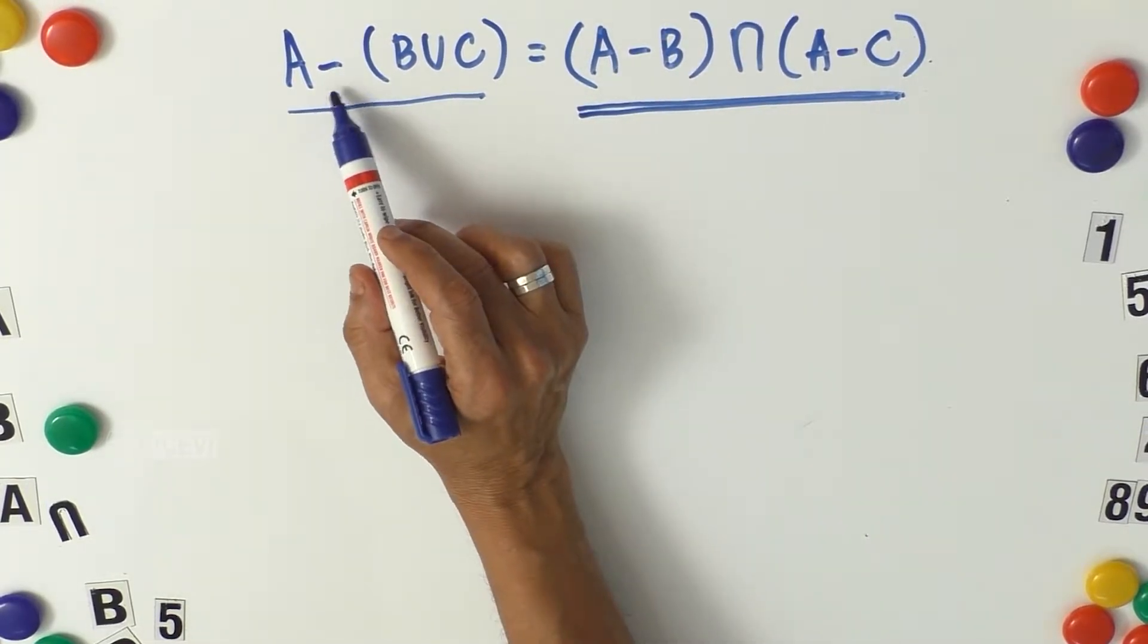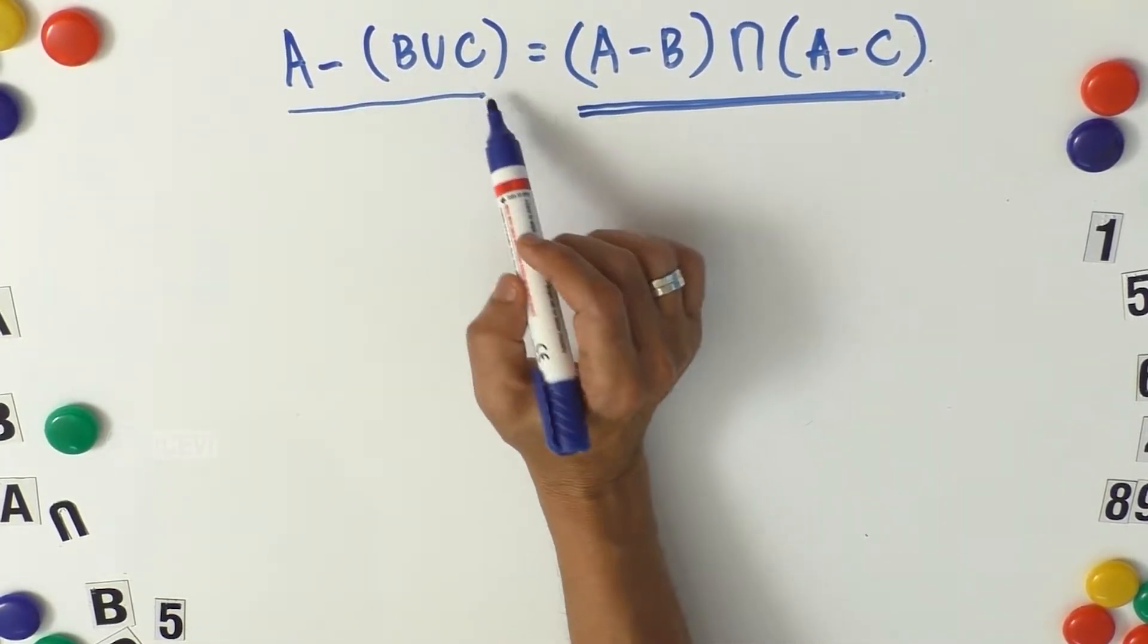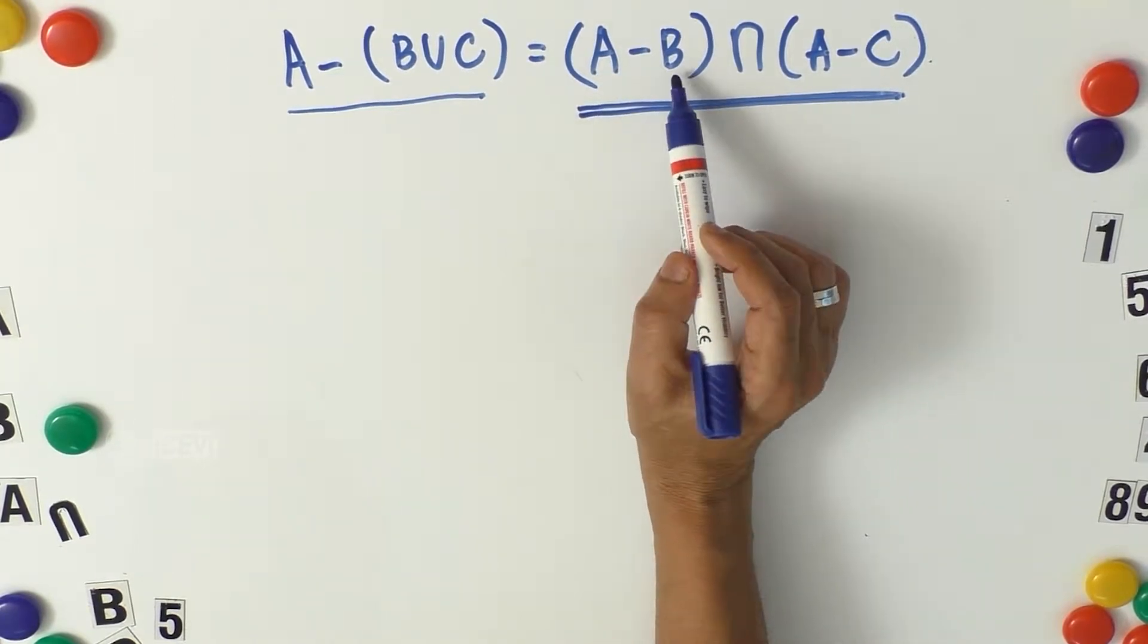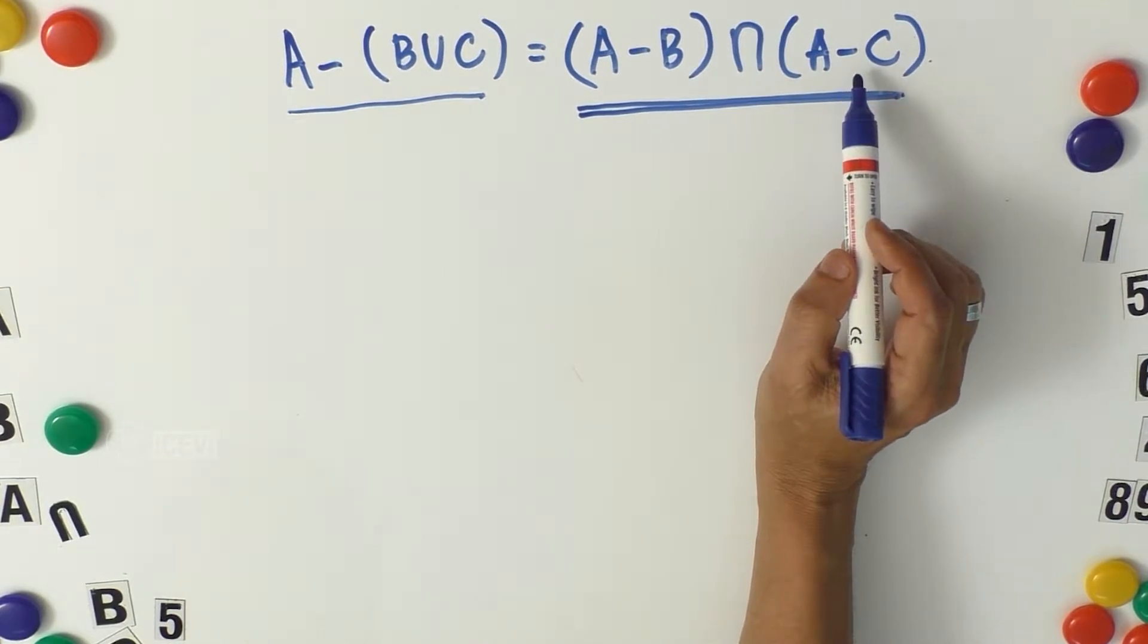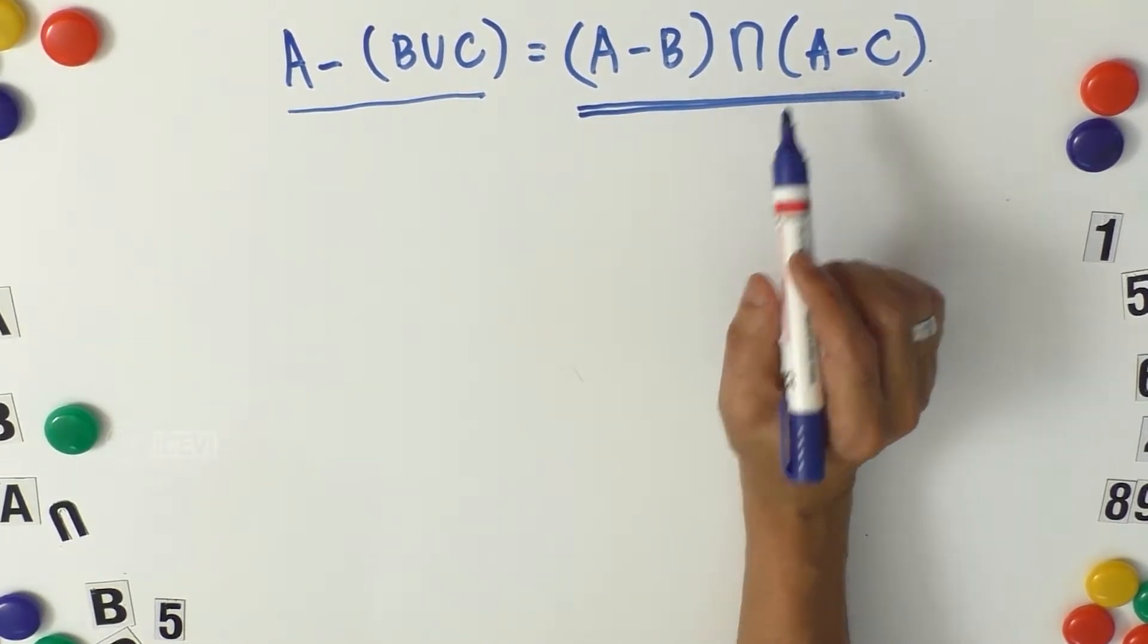Let us prove A minus B union C equals A minus B intersection A minus C. Let us prove this with numbers.